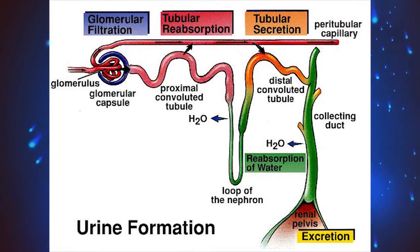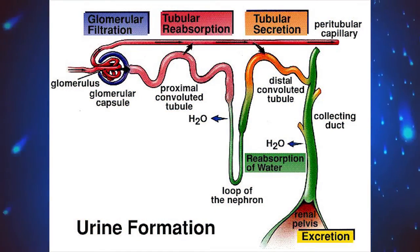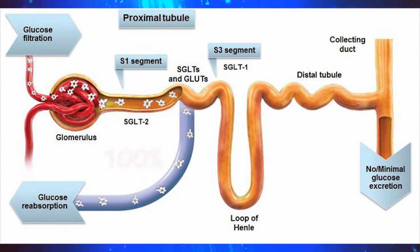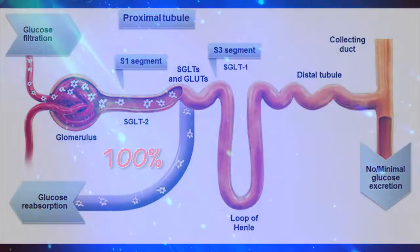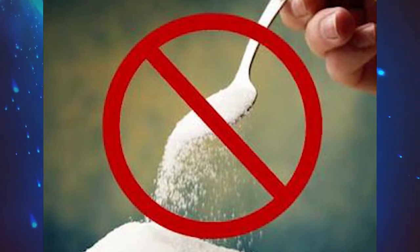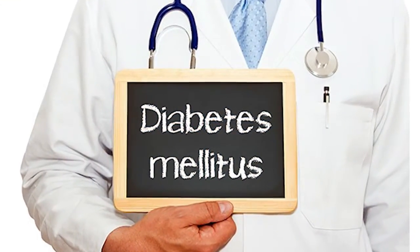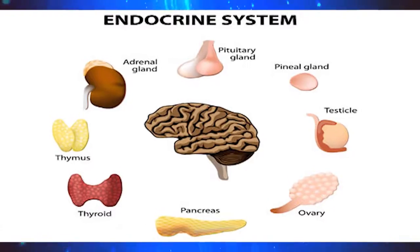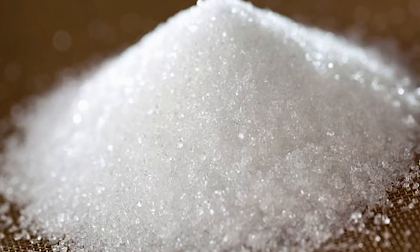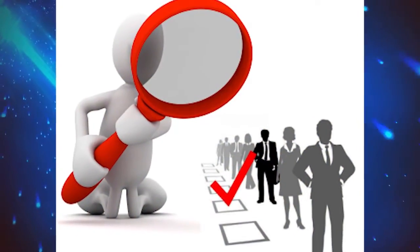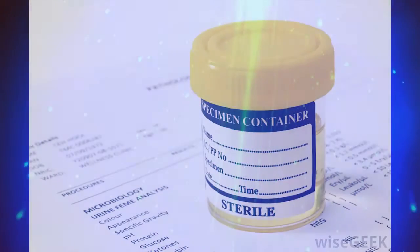Urine formation processes have three steps: glomerular filtration, tubular reabsorption, and tubular secretion. In the tubular reabsorption step, 100% of glucose is reabsorbed at the proximal convoluted tubule. So, healthy human urine is absent of glucose. But in some disease conditions like diabetes mellitus, pancreatic disease, and endocrine disease, urine can test positive for glucose. So, it is very important to identify those kinds of diseases by checking the urine glucose level.